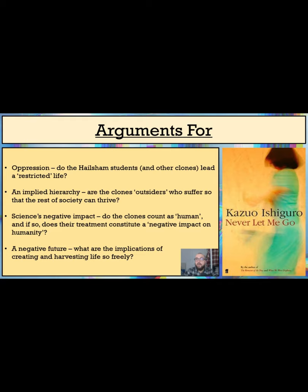We also find out about the Morningdale scandal, named after a scientist who started to develop ways of creating abnormally powerful and intelligent children, doing something so unnatural that it terrified the public. In a world in which life is so easily created, modified and harvested, what is preventing people from playing God?